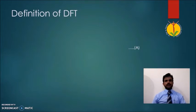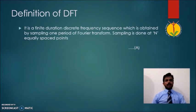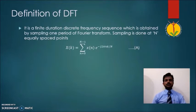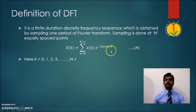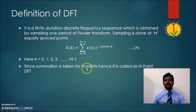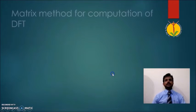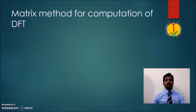DFT is a mathematical process useful for the conversion of a signal from time domain to frequency domain. It is a finite duration discrete frequency sequence obtained by sampling one period of the Fourier transform at equally spaced points. Mathematically, the DFT of a sequence X(n) is defined as X(k) = summation from n=0 to N-1 of X(n) e^(-j2πnk/N), where k runs from 0 to N-1. Since the summation is taken at N discrete points, it is called an N-point DFT.